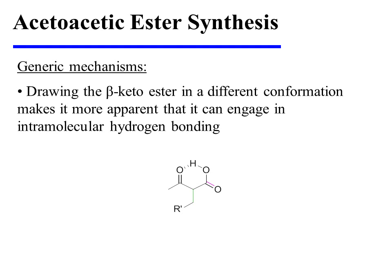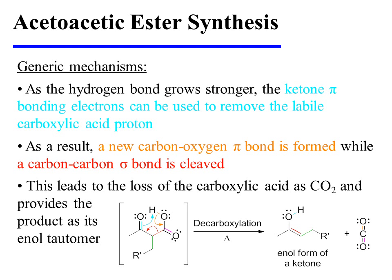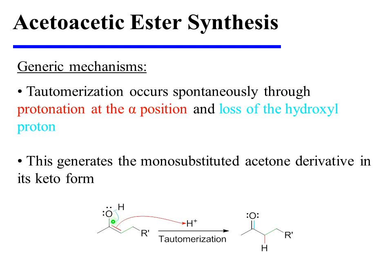Drawing the beta-keto acid in a different conformation makes it more apparent that it can engage in intramolecular hydrogen bonding. As the hydrogen bond grows stronger, the ketone pi-bonding electrons can be used to remove the labile carboxylic acid proton. As a result, a new carbon-oxygen pi bond is formed while a carbon-carbon sigma bond is cleaved, leading to loss of carbon dioxide and providing the product as its enol tautomer. Tautomerization then occurs spontaneously through protonation at the alpha position and loss of the hydroxyl proton, providing the monosubstituted acetone derivative in its keto form.